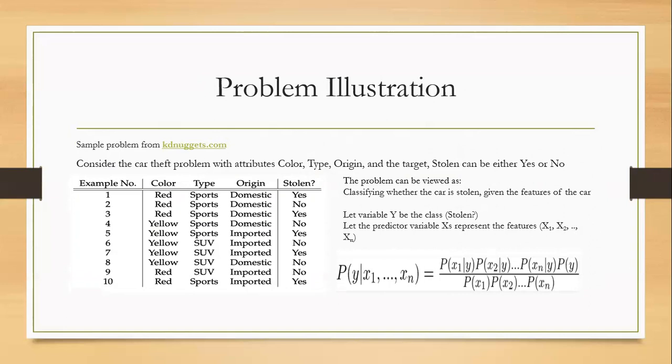This is one example that I got from kdnuggets.com. In this example, we're considering if the car type and origin have any association with the prior. So we're going to be using these attributes to classify if the car is stolen. Our classifier here is if the car is stolen or not, so yes or no classification problem.